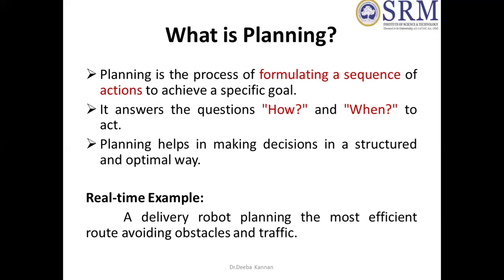One real-time example: in terms of artificial intelligence, when you want to automate something, that comes under artificial intelligence. I can take an example of a delivery robot system — a robot is planning to deliver some goods to a destination. It has to start from its place, find the shortest route that also avoids all obstacles and traffic, and reach the destination. The robot has to automatically frame this path itself. That process is called planning. It involves a sequence of actions arranged in order to reach the specific goal.